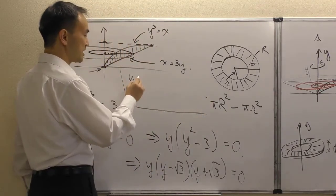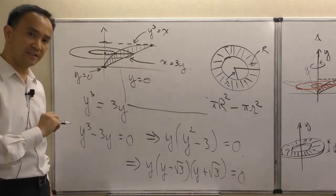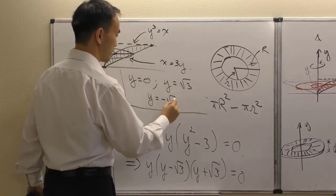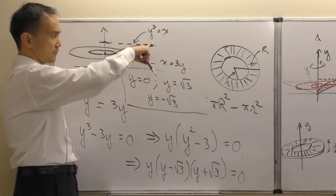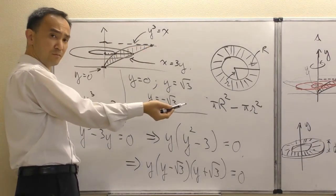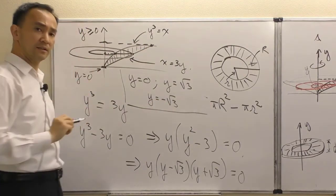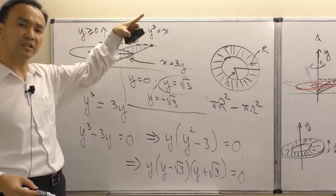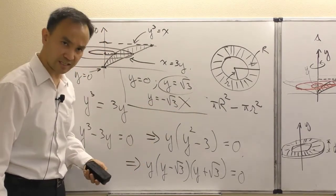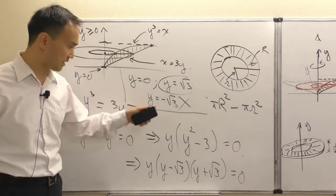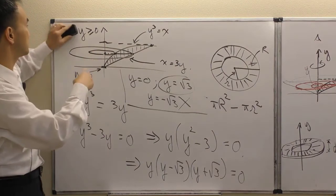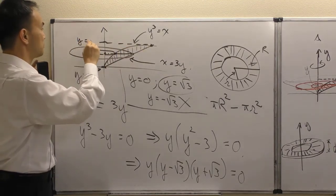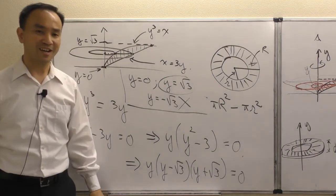The three solutions are y = 0, y = √3, and y = -√3. Since the problem specifies y ≥ 0, the region is completely above the x-axis, so we disregard y = -√3. The bottom of our region is y = 0 and the top is y = √3.